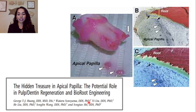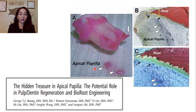This was taken from the article published by Dr. George Huang. Looking at an immature third molar with open immature apices, they isolated the apical papilla and found that stem cells reside in this area — those are the SCAPs I was just mentioning.